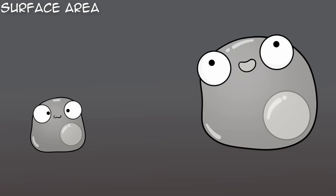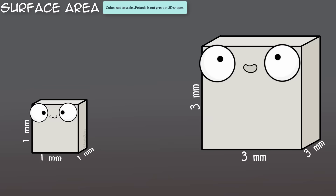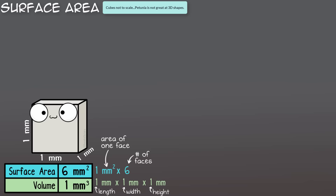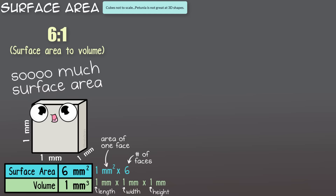If we do a little bit of math here between these two models — I'm going to use cube models instead of egg-shaped models because it's a little faster for surface area and volume calculations — see how there is a big difference in surface area to volume in the smaller model? A six to one ratio, meaning the surface area is six times more than the volume.